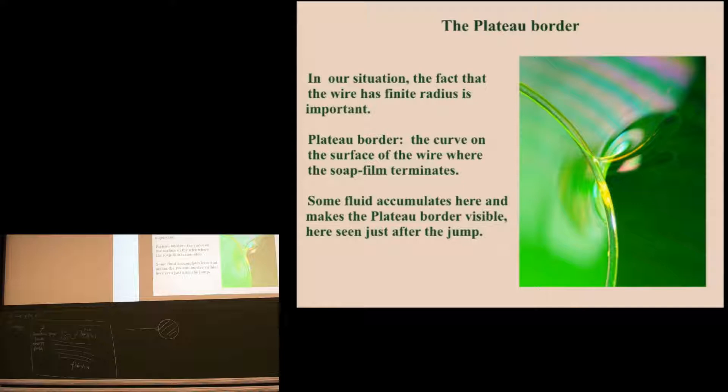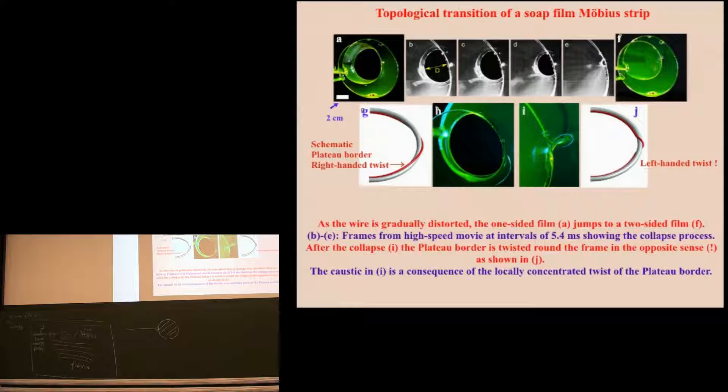So you see what's happened. You started here. Here we've opened the wire just very slightly, and it's jumped to this. And the jump takes place through a sequence. And you've got a scale, D here, which goes pretty rapidly in some kind of self-similar manner to zero. The hole disappears, and the topology, the resulting topology, changes.